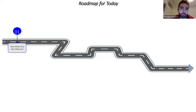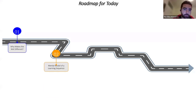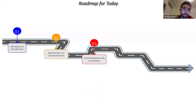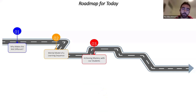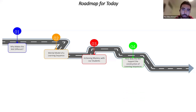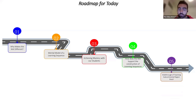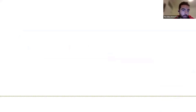Here's a roadmap for today. Five different things: first, what makes The Natural World different; second, a mental model of a learning sequence — a framework for what learning looks like in every single lesson; third, achieving mastery with our students — how do we get students from novice to mastery; fourth, how The Natural World supports the construction of powerful learning sequences; and finally, a walkthrough of teaching our subcontinental region of Brazil with the resources available as part of The Natural World package.